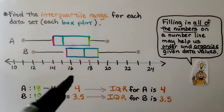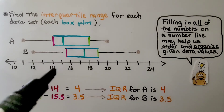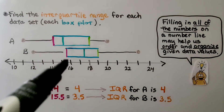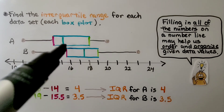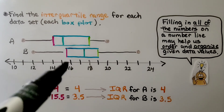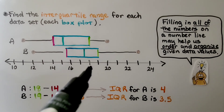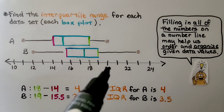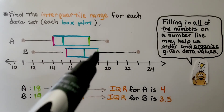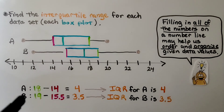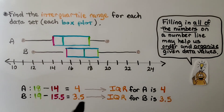For B, the lower quartile is 15.5 — since that's between 14 and 15, it reads as 15.5. And the upper quartile is 19, because it falls between 18 and 20. So we do 19 minus 15.5, which is 3.5. The IQR for B is 3.5.